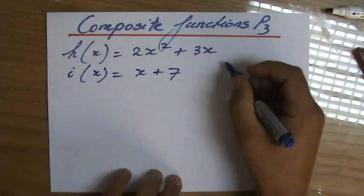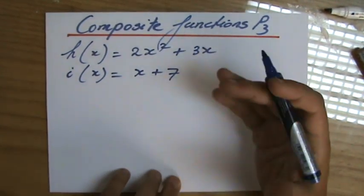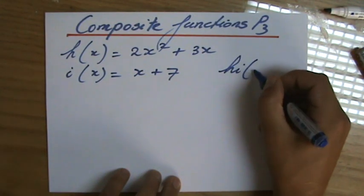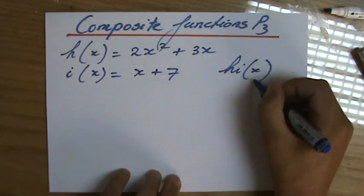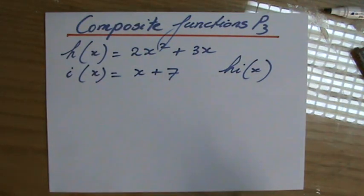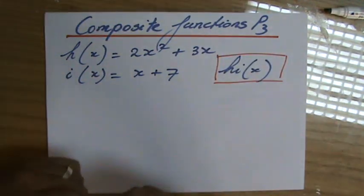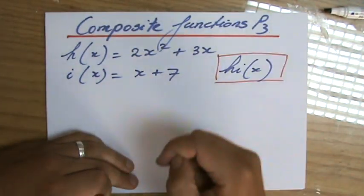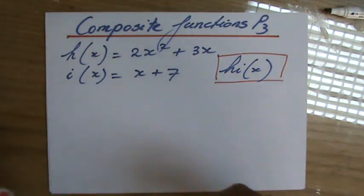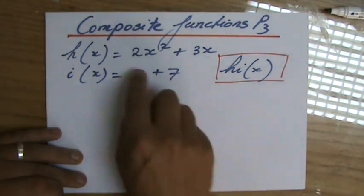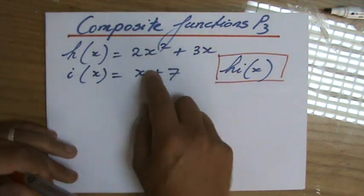That asks me now to write a formula for the composite function h(i(x)). Now hopefully you know by now what that means. It means that I have to plug in the function i in h for x. So I have to substitute it or evaluate this function for that function.